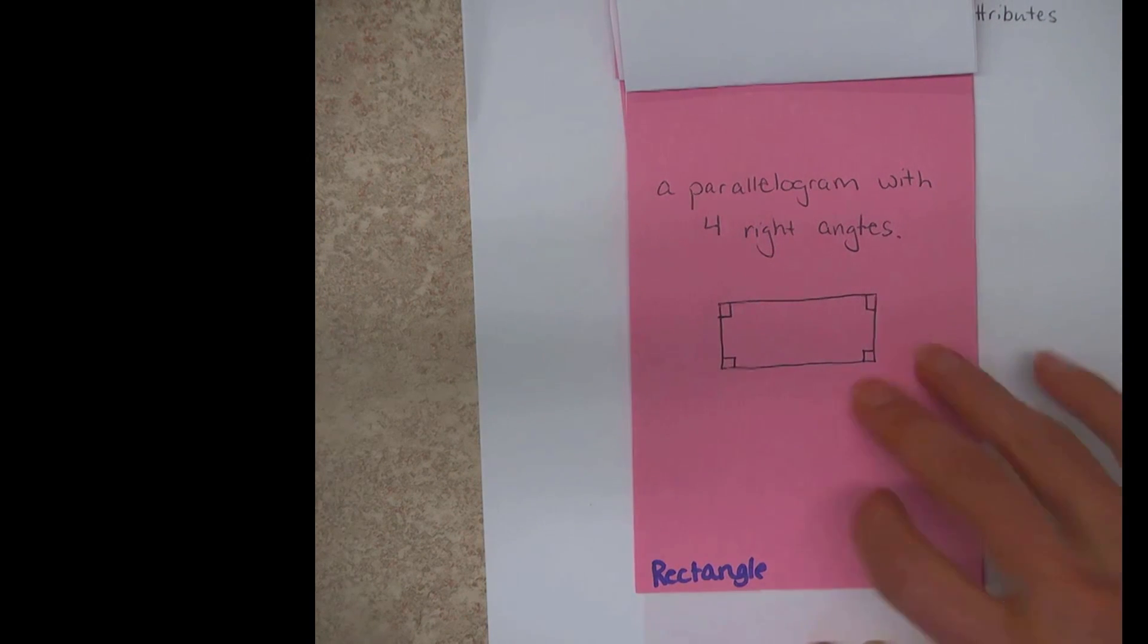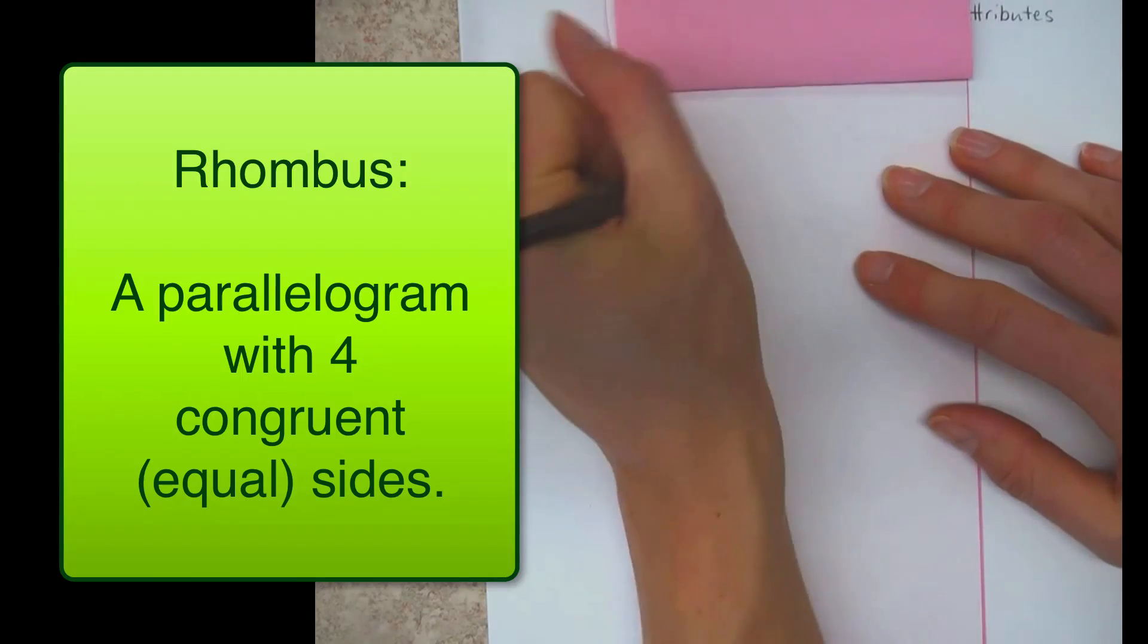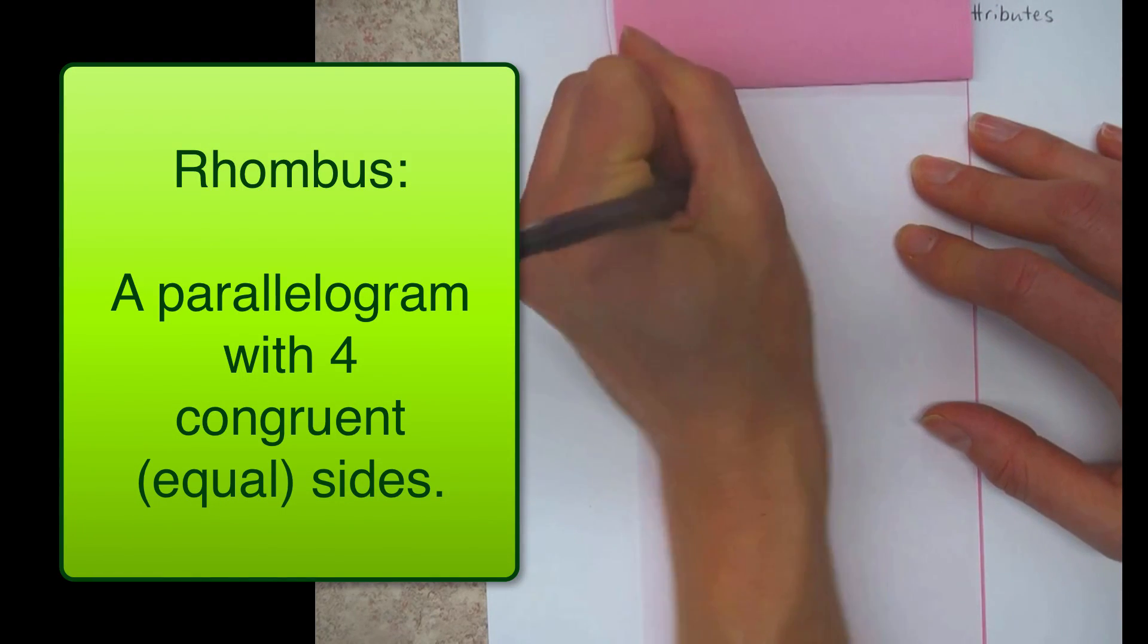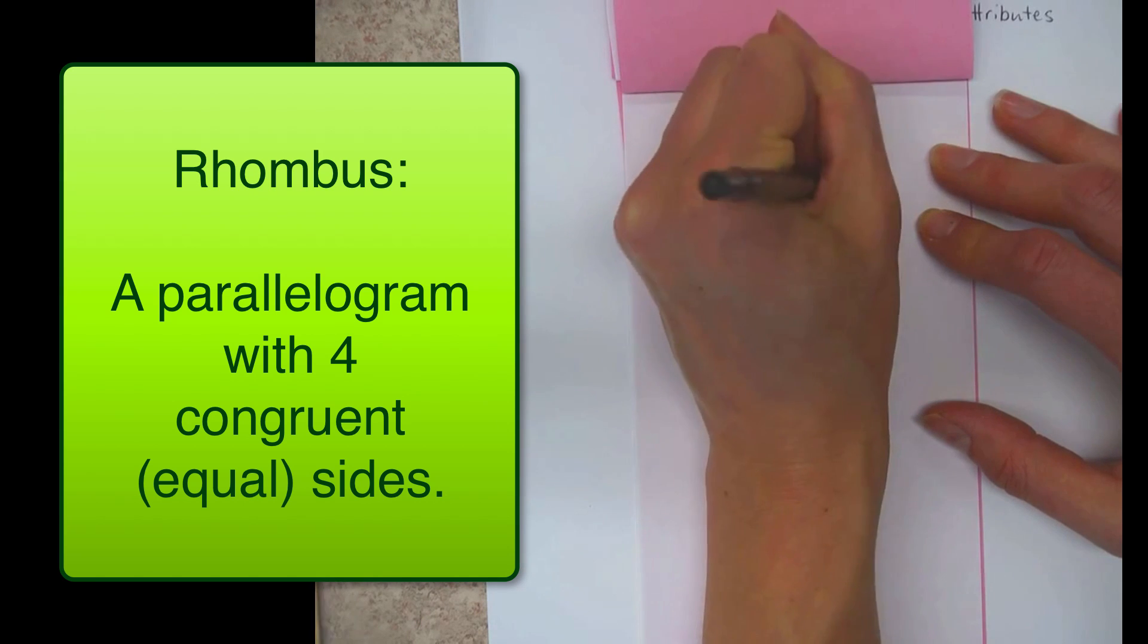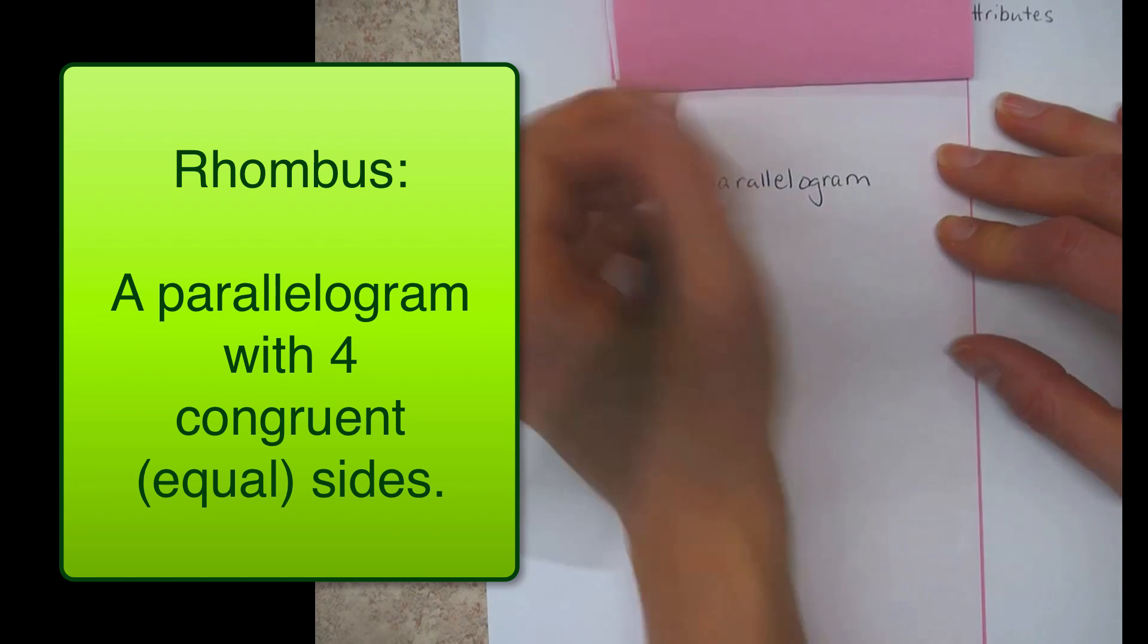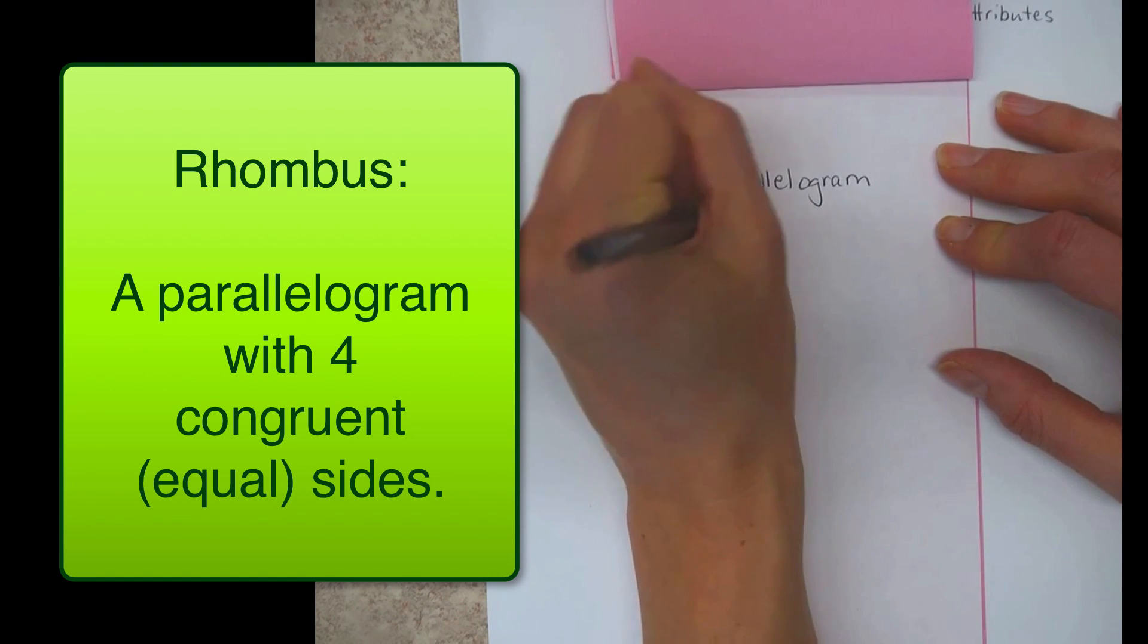A rhombus is also a parallelogram with four congruent sides, which brings us to another word. We can just say equal. Equal would mean the same thing. So a parallelogram with four congruent or equal sides.